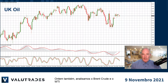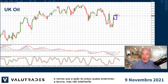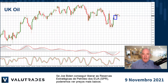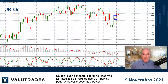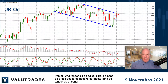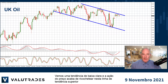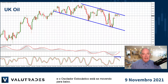Yesterday we also looked at Brent Crude and WTI, and we see that price action almost filled the gap but not quite. If Joe Biden succeeds in releasing the US Strategic Petroleum Reserves, we may see lower prices. We see a clear downtrend and price action has just bounced off this upper trend line, with the stochastic oscillator moving lower.